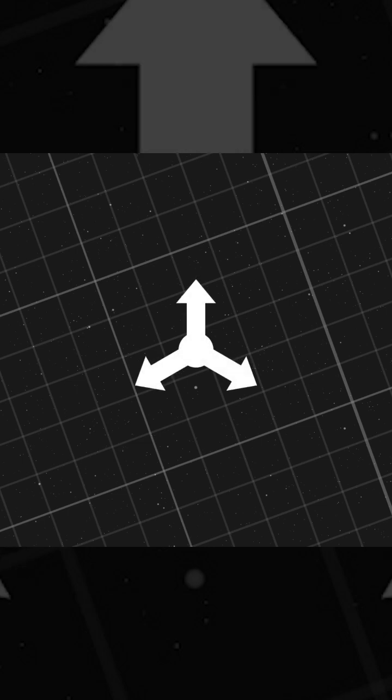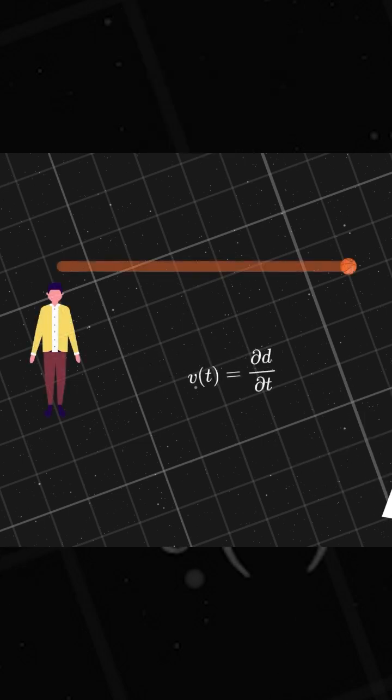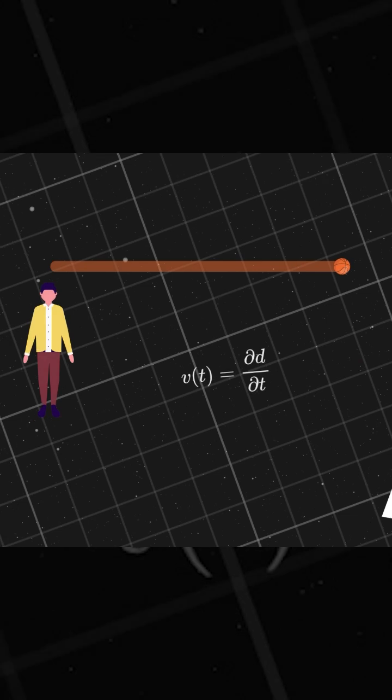Repeating this experiment elsewhere in the universe yields the same result. The ball behaves identically. This suggests that the universe exhibits translational symmetry, meaning the laws of physics remain unchanged regardless of location.